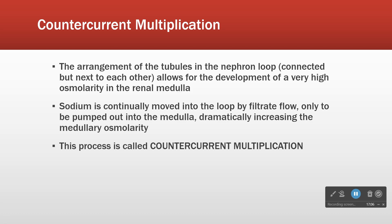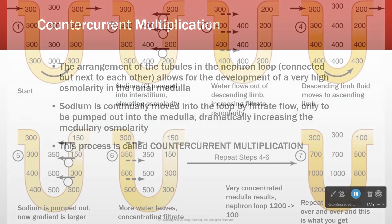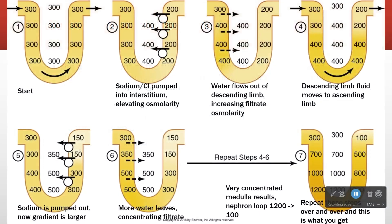We have the two sides of the nephron loop that are close together. They share the same interstitium. So we get an interaction between solute and water on the two sides.